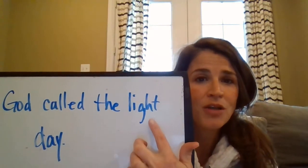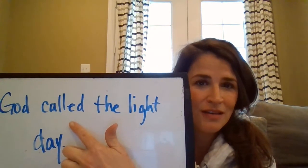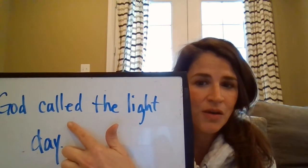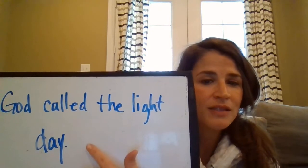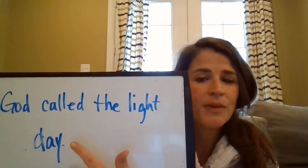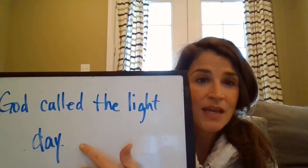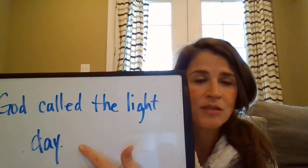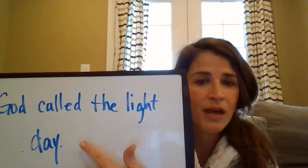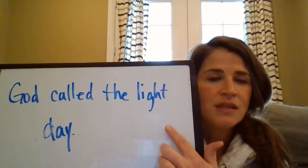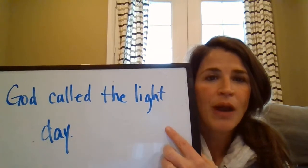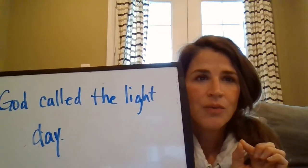An object complement noun changes the name of the direct object as a result of the action in the sentence. Because God called — he called the light — and what did he call it? He called it 'day.' So this is an object complement noun. 'Day' is a noun because it's a person, place, thing, activity, or idea, but in the sentence it functions as an object complement noun. This sentence is in your guide to practice the pattern only.